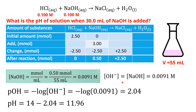We have the hydroxide concentration, so we can calculate the pH. pOH = negative log(0.0091) = 2.04. Then pH = 14 − pOH, which gives the pH of the solution.